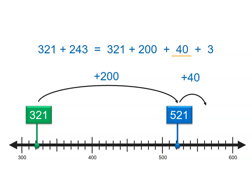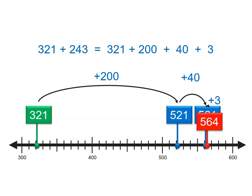Next, if we add 40 to that, the sum is 561. Finally, if we add 3 units, we get 564. So 321 plus 243 is 564.